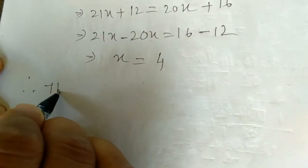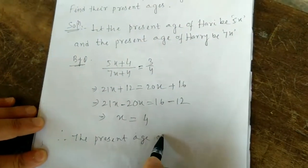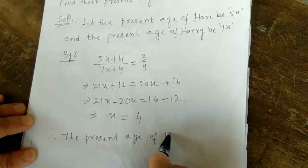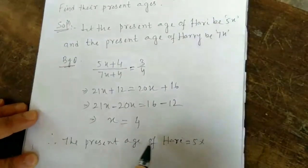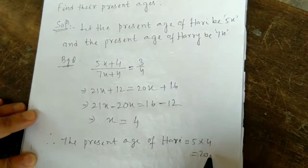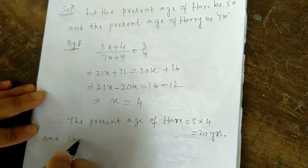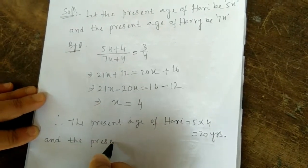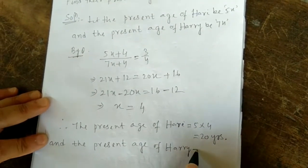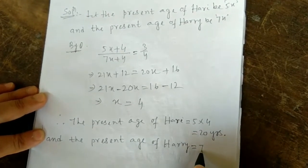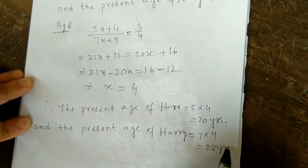Therefore, the present age of Hari equals 5x = 5 × 4 = 20 years. And the present age of Harry equals 7x = 7 × 4 = 28 years. This is the answer.